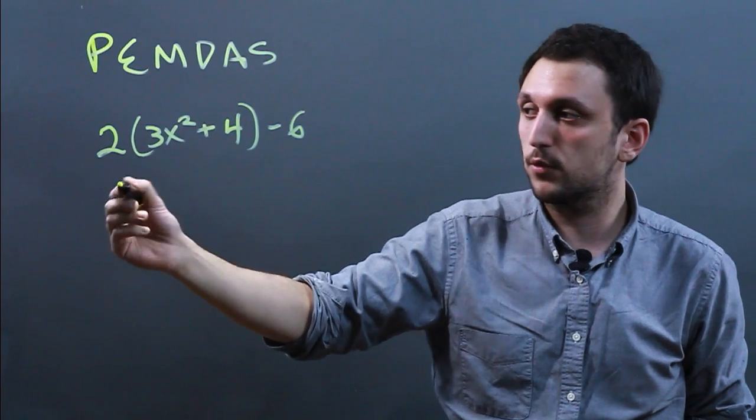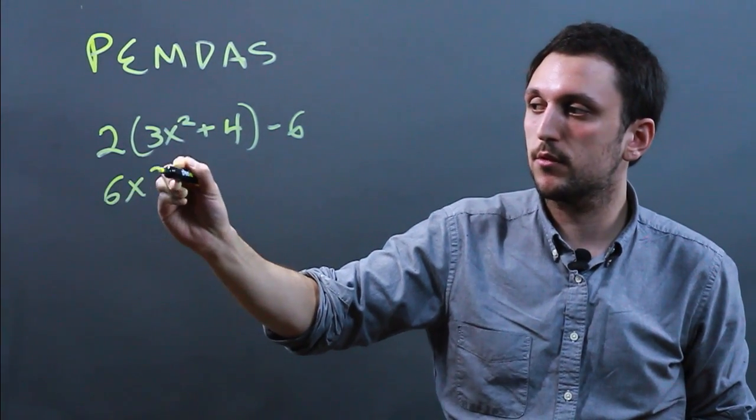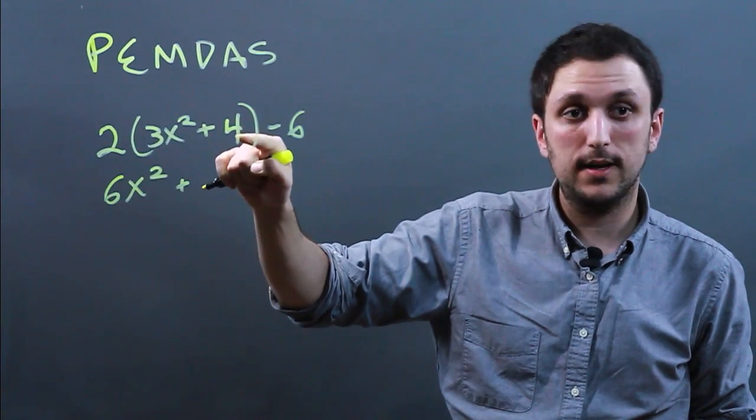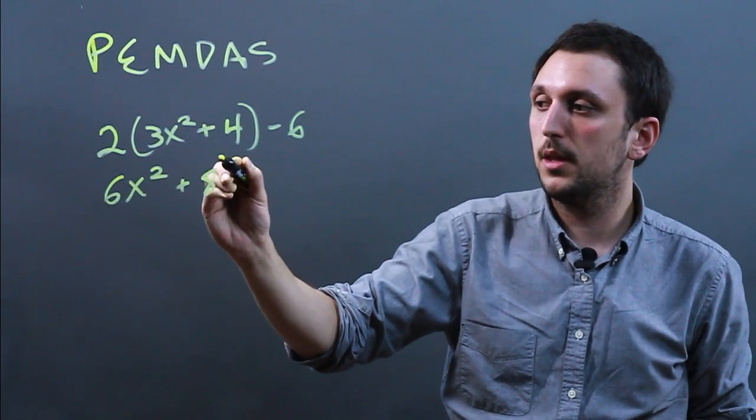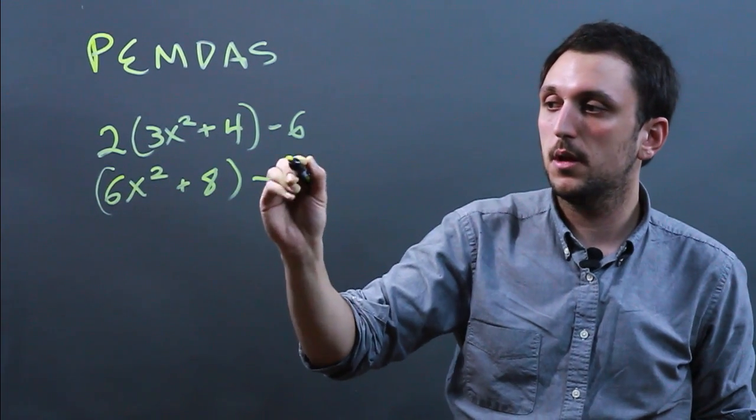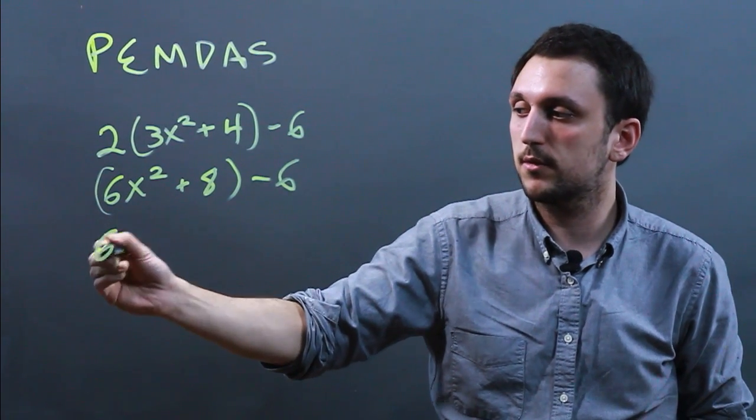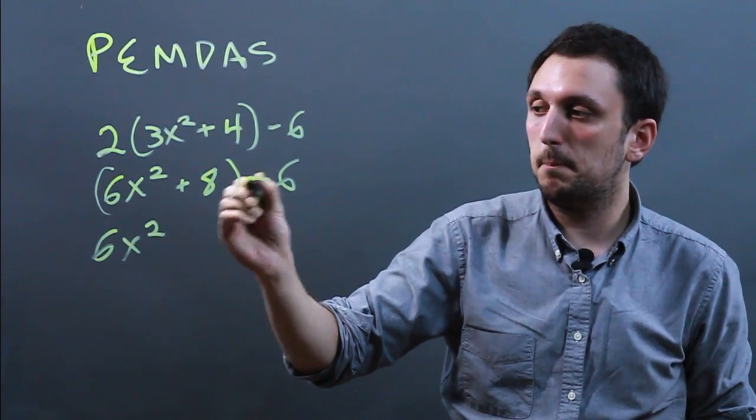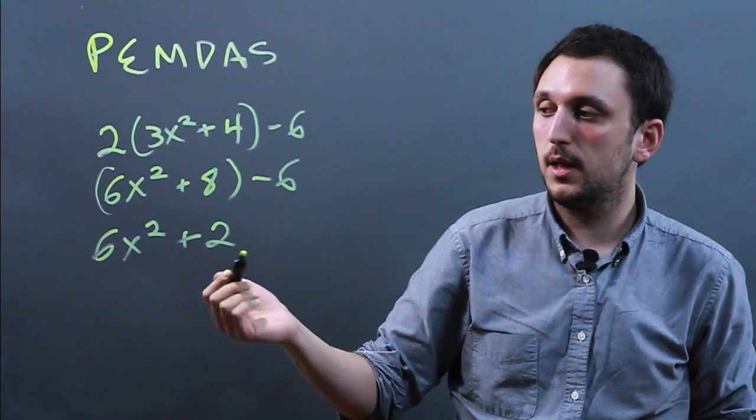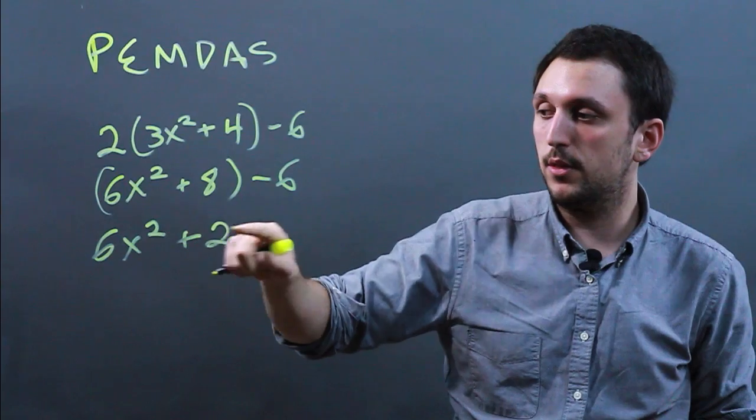So we would get 6x² plus 2 times 4 which is 8, and then that becomes parentheses minus 6. So plus 8 minus 6 is going to be 6x² + 2 and then we would be simplified down to this.